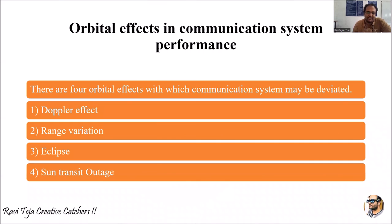These are the several orbital effects. Whenever you are given a question in the exam about the different types of orbital effects with respect to satellite communication, you need to discuss: first, the Doppler effect; second, range variation; third, eclipse; and fourth, sun transit outage. These are very simple yet very important concepts.